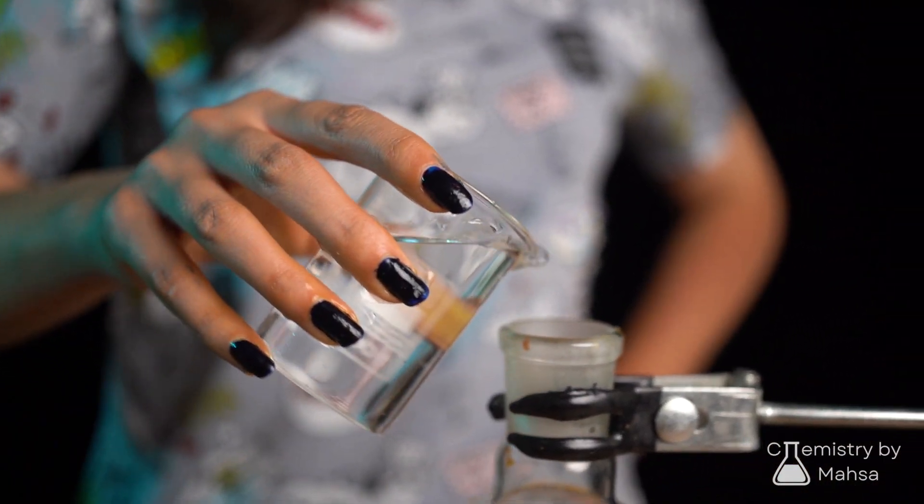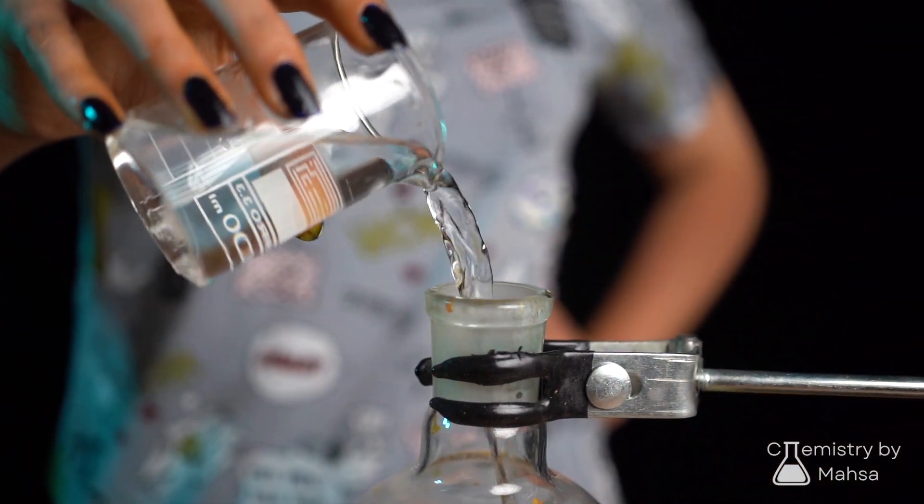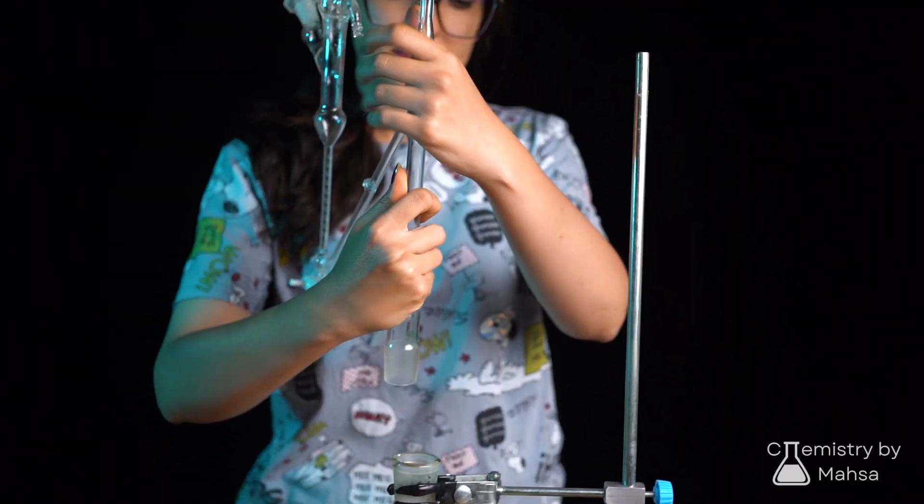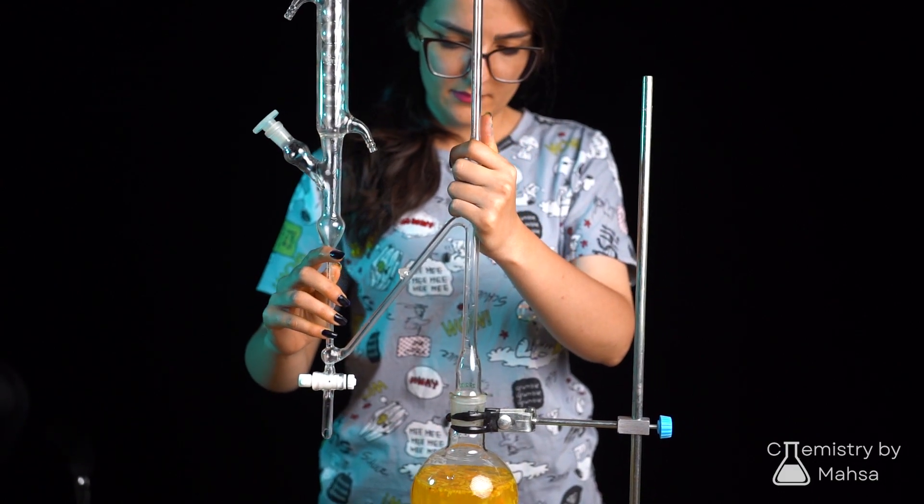Transfer the orange peels to a round bottom flask and add water to it afterwards. The ratio between the amount of orange peels and water should be 1 to 5.